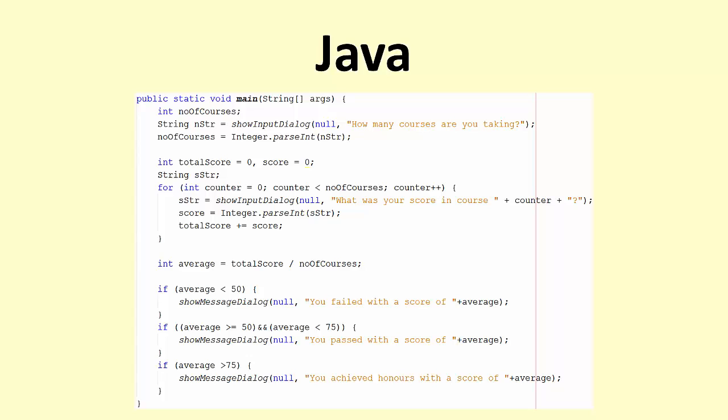But if we have a look at this Java program, it does exactly the same thing. The words that we're using, the vocabulary, the commands, they're different. The syntax that we use, the grammar of the language, is different. But the logic is exactly the same. We start off by asking the user how many courses they're taking. We then set total score to zero. We then ask the user what their score was in a particular course and add that score to the total score. We then find the average by dividing the total score by the number of courses. And then we display a message that says either you failed or you passed or you achieved honors depending on the average score. You'll notice that the logic is exactly the same.